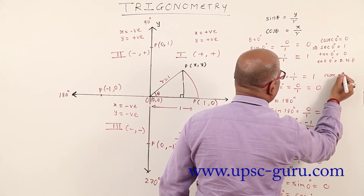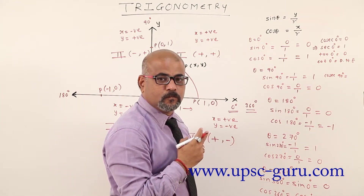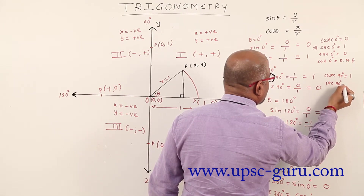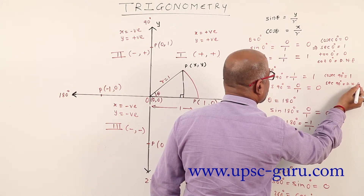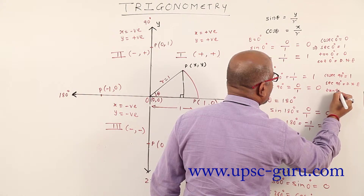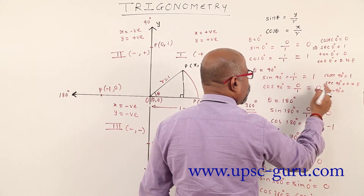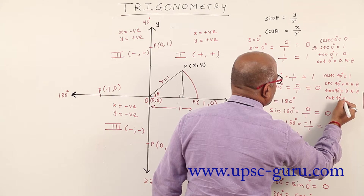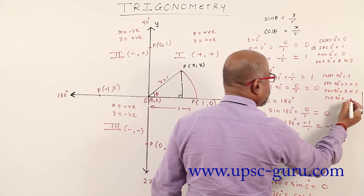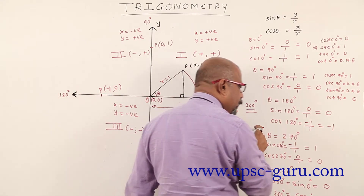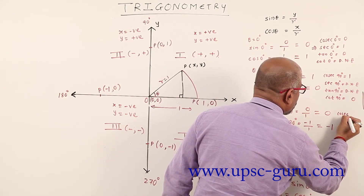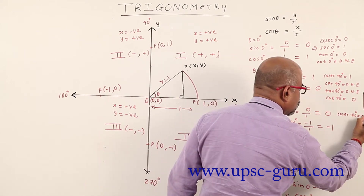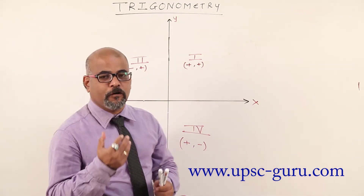Cosec 90 degree: reciprocal of sin 90, which is 1, so cosec 90 equals 1. Cos 90 degree equals 0. Tan 90 degree: sine upon cos, that is 1 upon 0 — divided by 0, does not exist. Cot 90 degree: cos upon sin, that is 0 upon 1 is 0. When we move to 180 degree, cosec 180 degree: reciprocal of sin 180, which is 0, so 1 upon 0 — does not exist.